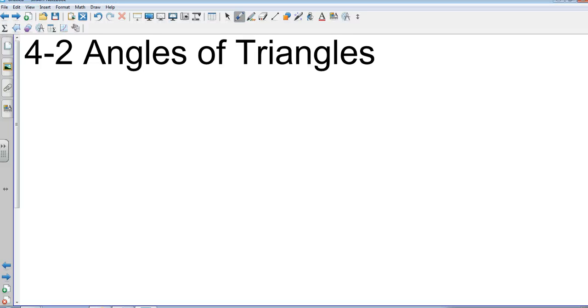All right guys, chapter 4 section 2, angles of triangles. Obviously each triangle has three angles and yesterday we classified them by their angles. Now we're going to talk about their actual values.